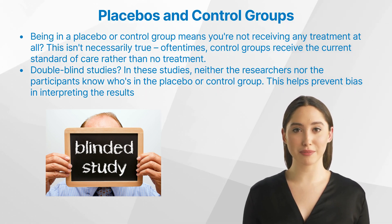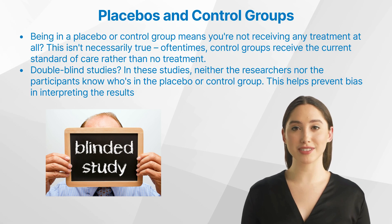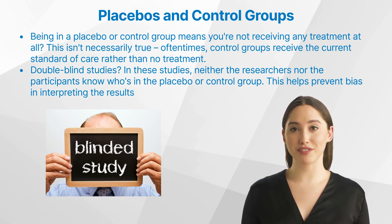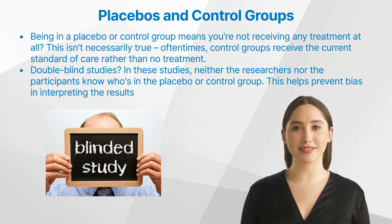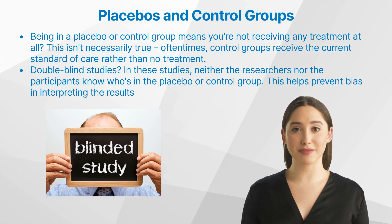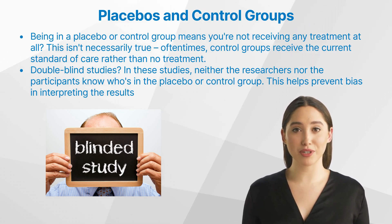In double-blind studies, neither the researchers nor the participants know who is in the placebo or control group. This helps prevent bias in interpreting the results. Always keep in mind that if an emergency occurs, patients can be unblinded quickly to help them effectively.